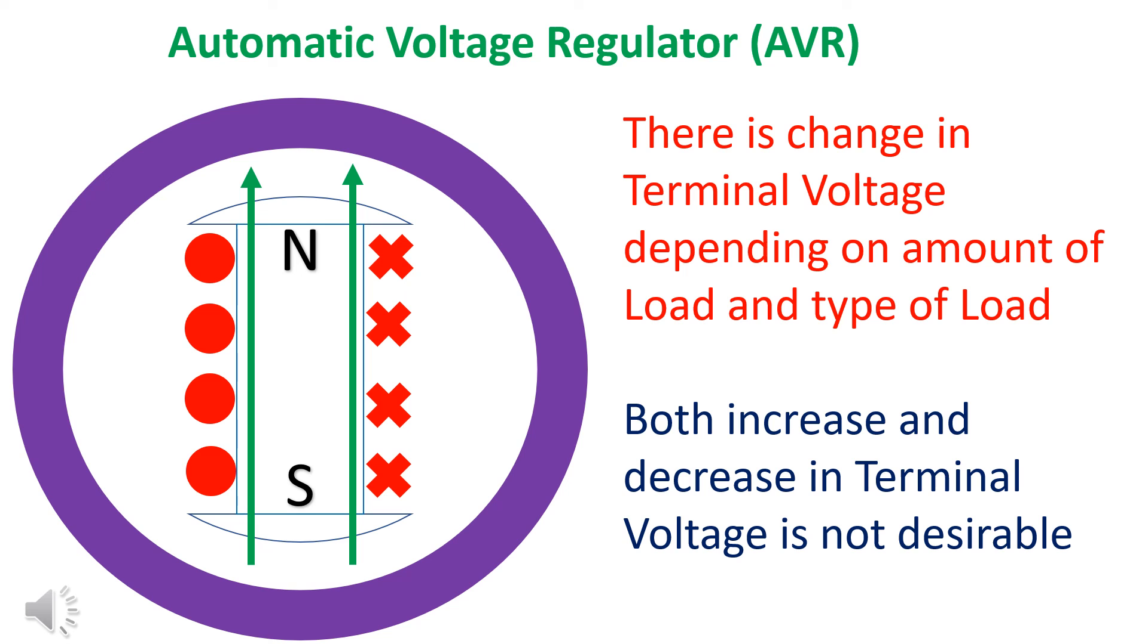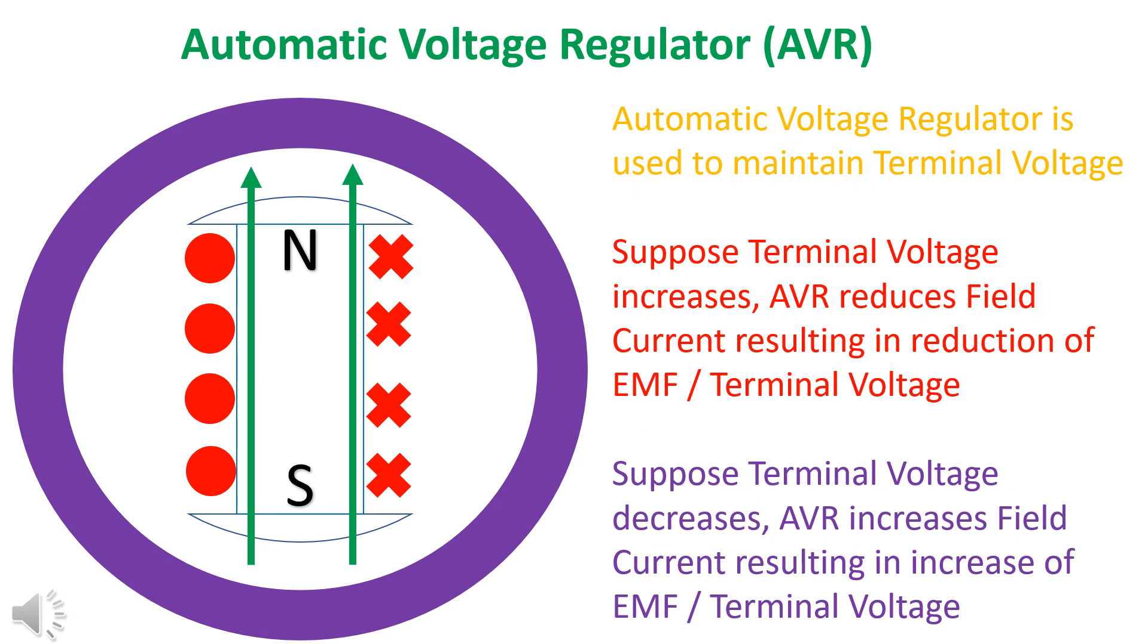We have seen that terminal voltage changes with type of load and amount of load. Automatic voltage regulator is used to maintain the terminal voltage.